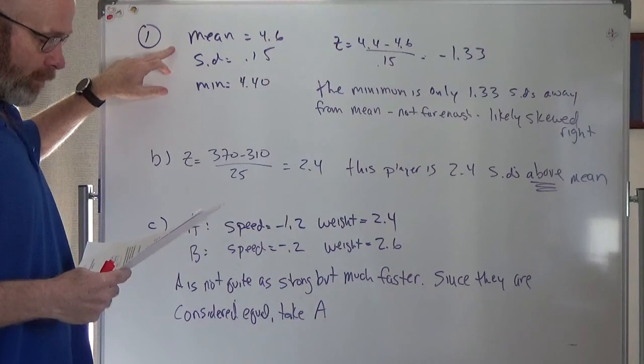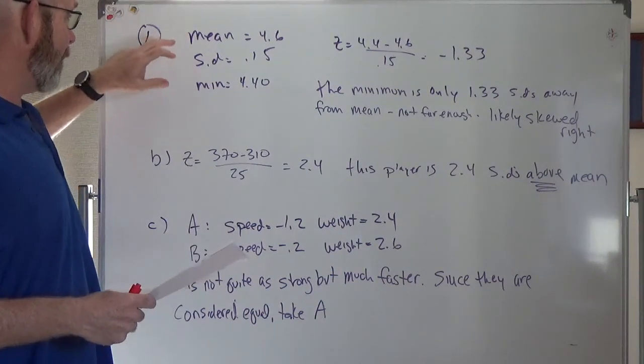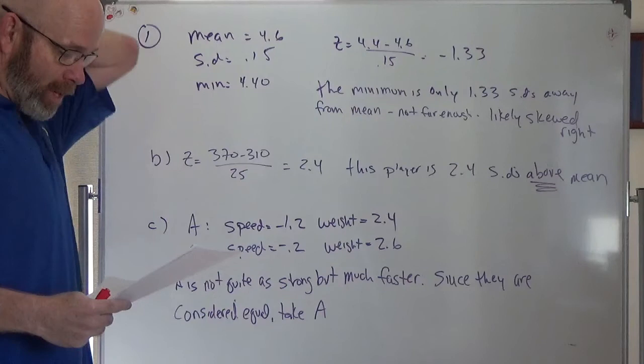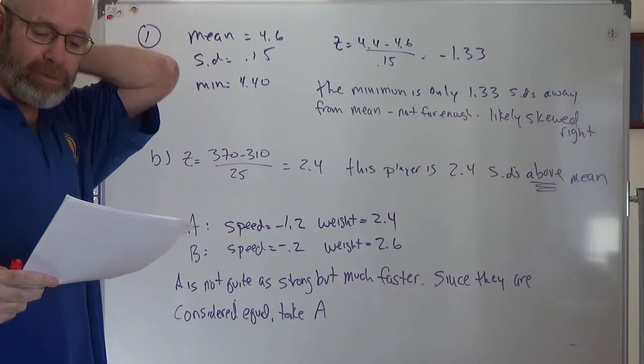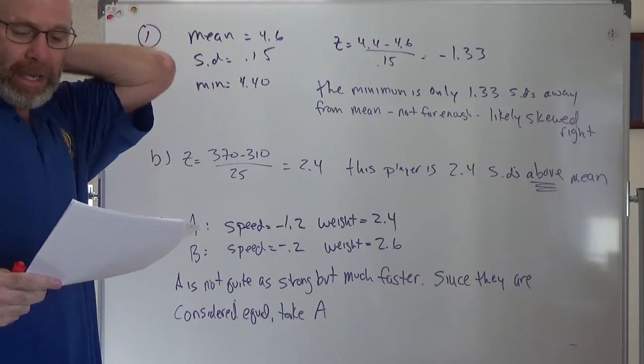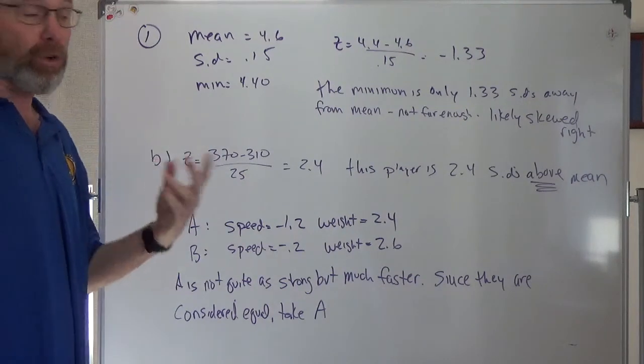So this was the first one that was running 40 yards, so mean, standard deviation and minimum. And the question was, based on the relationship between mean, standard deviation and minimum time, is it reasonable to believe it's roughly normal?